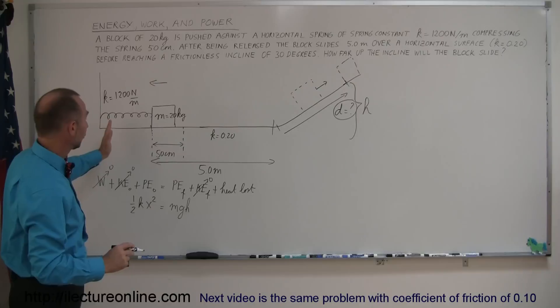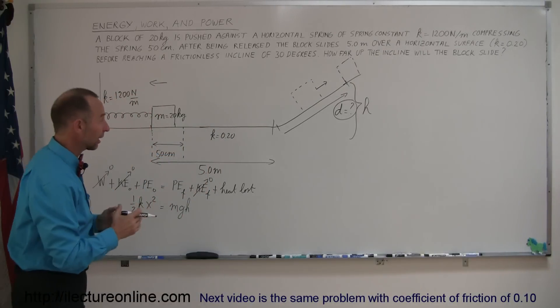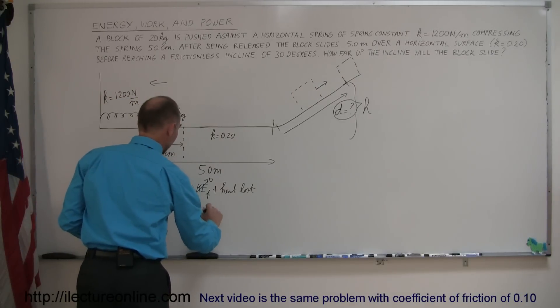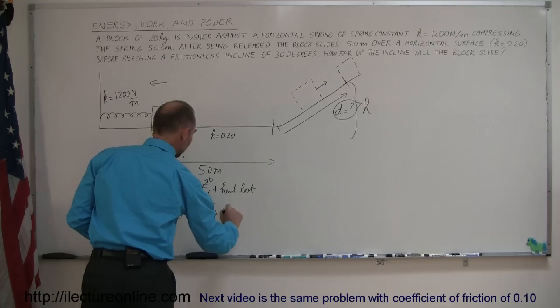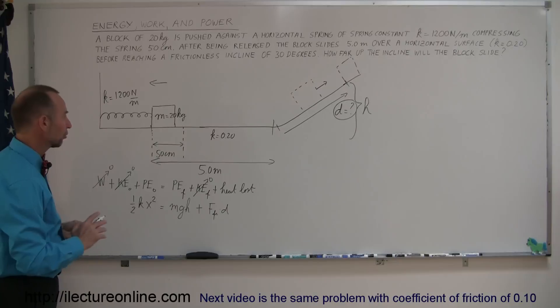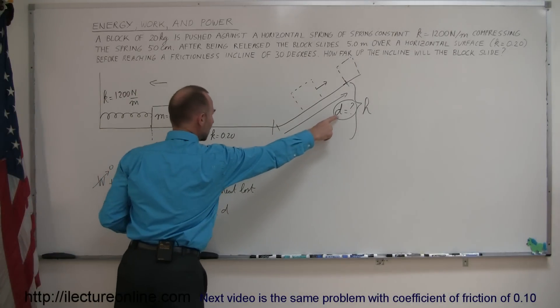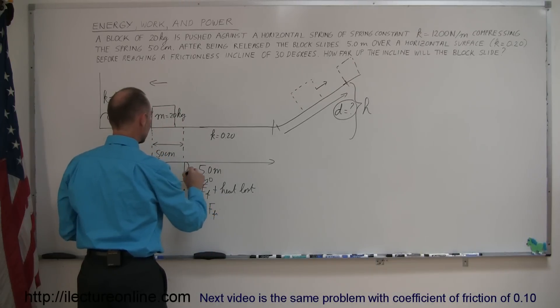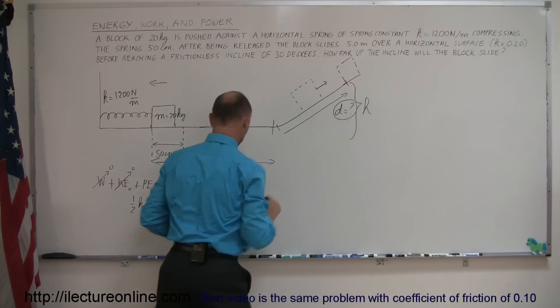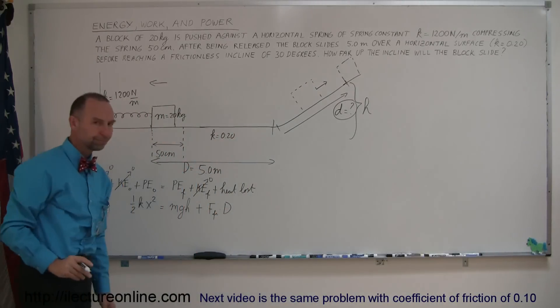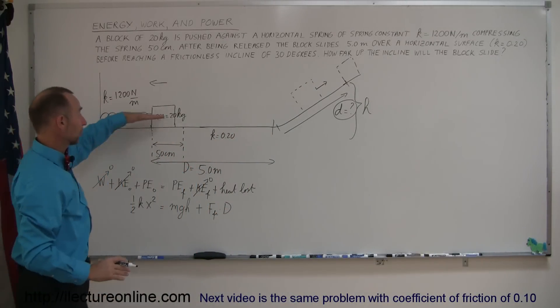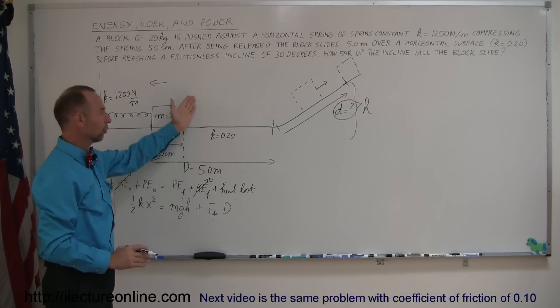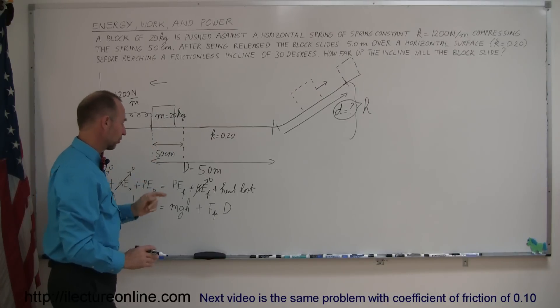And we do have heat loss because for a distance here, equal to five meters, the block has to travel across a surface with friction. So that means this is plus the friction force times the distance traveled over the surface there. Now, I have to be careful. I shouldn't use the same D here as I use here. That's a different distance. So let me just make it a big D to differentiate between this distance here and this distance here.